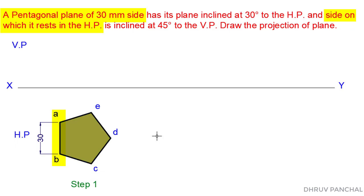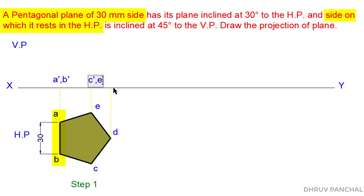To draw the front view of the pentagonal plane, take projections of each point into the vertical plane and mark points A', B', C', D', and E', and join them as shown.